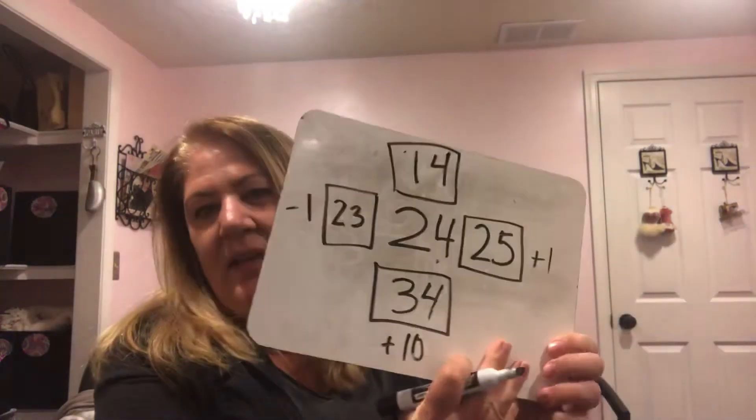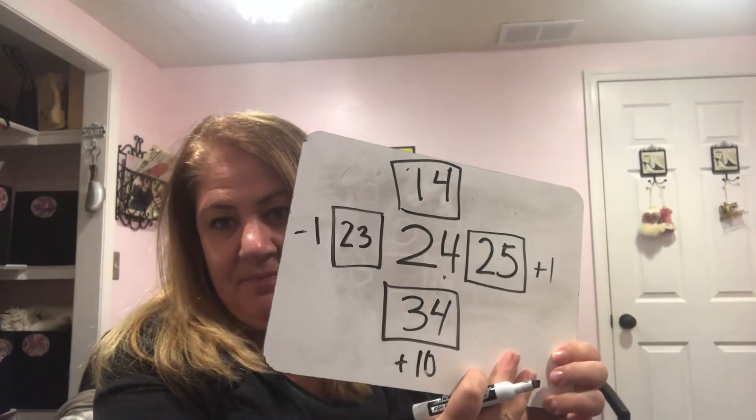I'm trying to write while holding it up — very sloppy, you should not do that. Ten less would be 14. Now erase what you did, or get yourself another section, and write down the number 47.